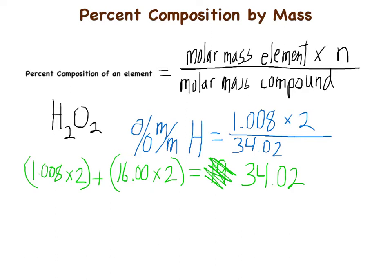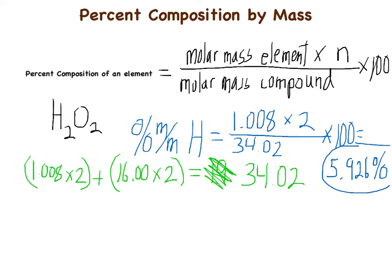Don't forget to multiply by 100 — that's part of the percent composition equation. The answer comes out to 5.926%. That is the percent composition by mass for hydrogen in hydrogen peroxide.